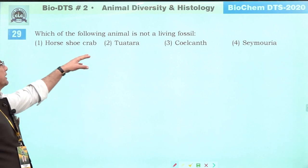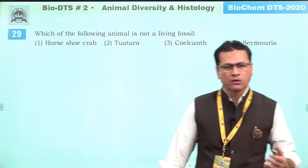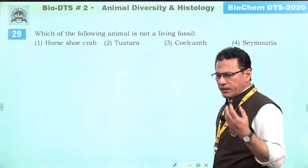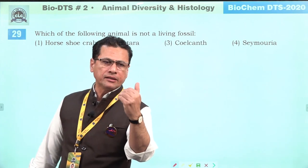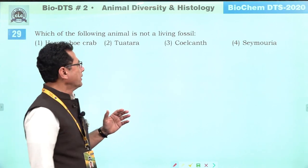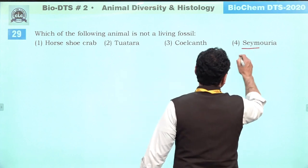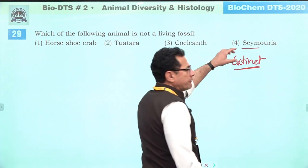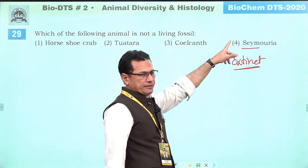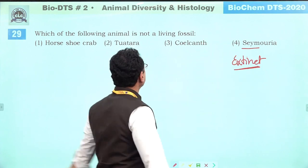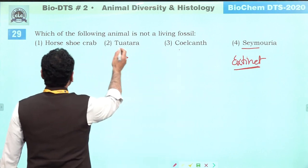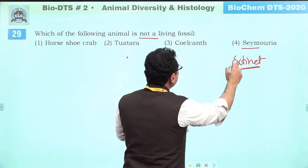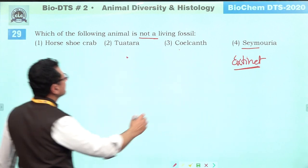Which of the following is not a living fossil? A living fossil is an organism that has not undergone any major evolutionary change since its origin. The organism mentioned (connecting link between Amphibia and Reptilia) is extinct — it is a missing link, not a living fossil. The other options are living. Since it is extinct, it cannot be a living fossil. Answer is four.